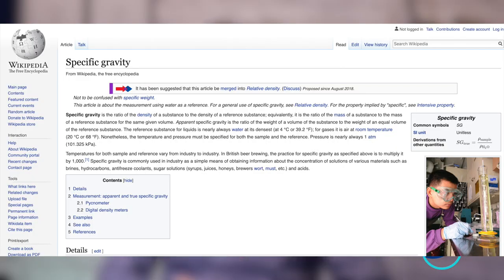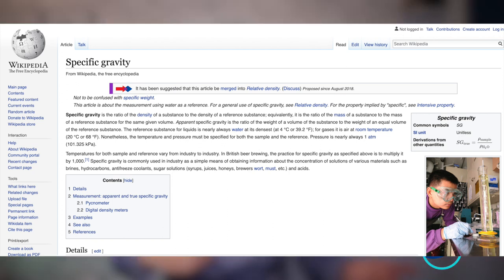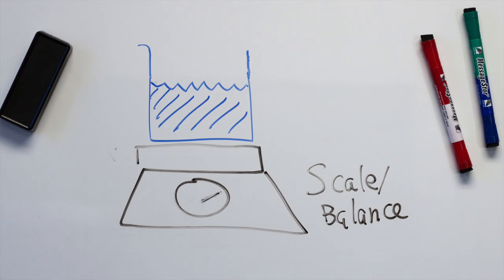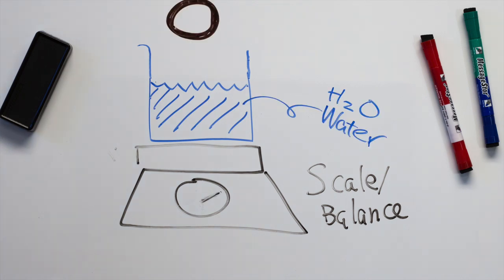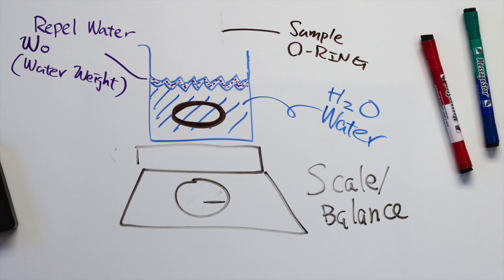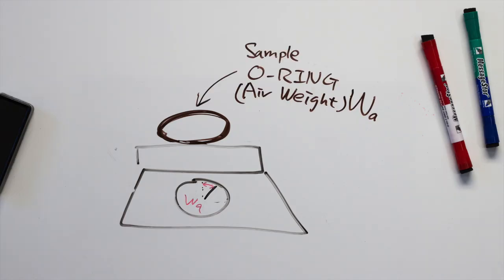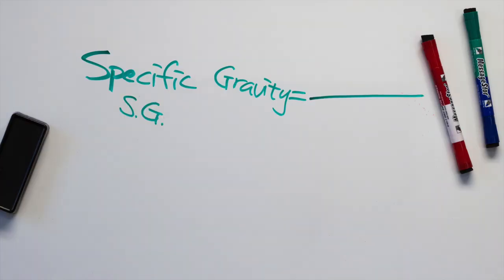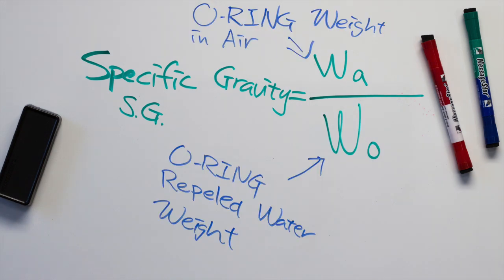According to Wikipedia, specific gravity is the ratio of the density of a substance to the density of a reference substance. Equivalently, it is the ratio of the mass of a substance to the mass of a reference substance for a given volume. We will use a lab scale and submerge the test specimen — the O-ring — into a water bath, and it cannot touch the bottom of the beaker. The O-ring will displace a certain amount of water, which we call water weight W-O. Then we measure the O-ring weight in air, which we call air weight W-A. The specific gravity is the ratio of weight in air to weight in water: W-A over W-O. Not rocket science, right?